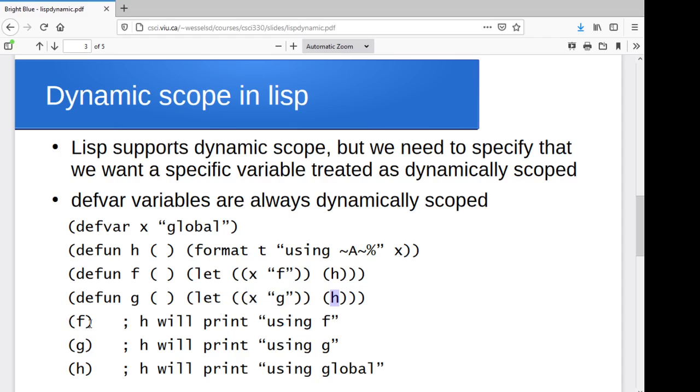All right, so again, if we call f, it's going to call h and h is going to print f's x. If we run g, then g is going to call h and h is going to print g's x. If we just straight call h, it's going to use that global x.